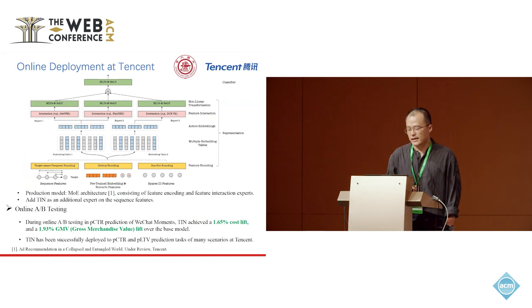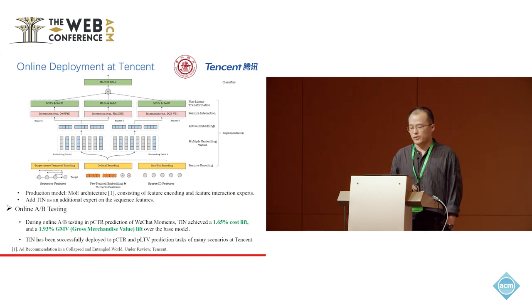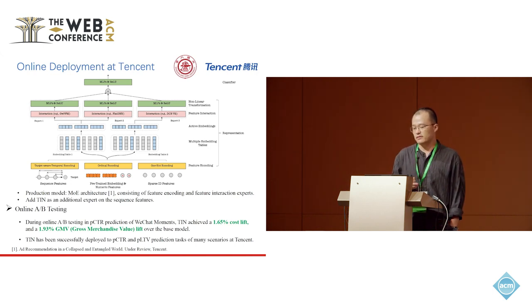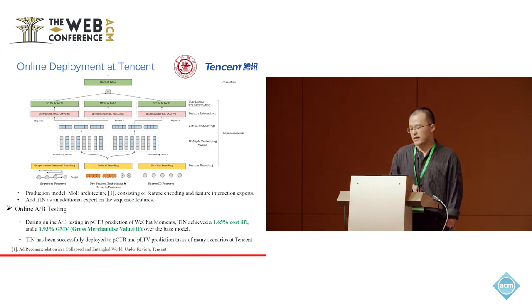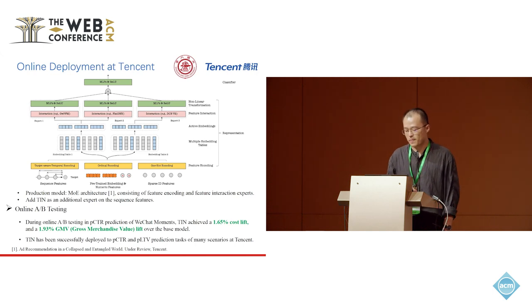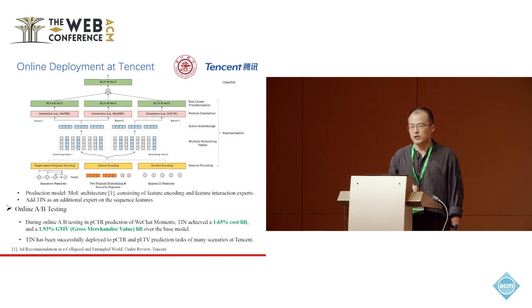We then deployed TRN at Tencent's ads recommendation platform. Our production model follows a popular mixture-of-experts architecture, which has a feature encoding layer and a feature interaction expert layer. The feature encoding layer handles various types of features like sparse ID features, numeric features, and embedding features. We add TRN as an additional expert to handle sequence features. During online tests in PCTR prediction of WeChat Moments, TRN gets 1.65% CTR lift and 1.93% GMV lift over the base model. TRN has since been successfully deployed to PCTR and PLTV prediction tasks across many scenarios at Tencent, bringing tens of millions of dollars in revenue lift every year.